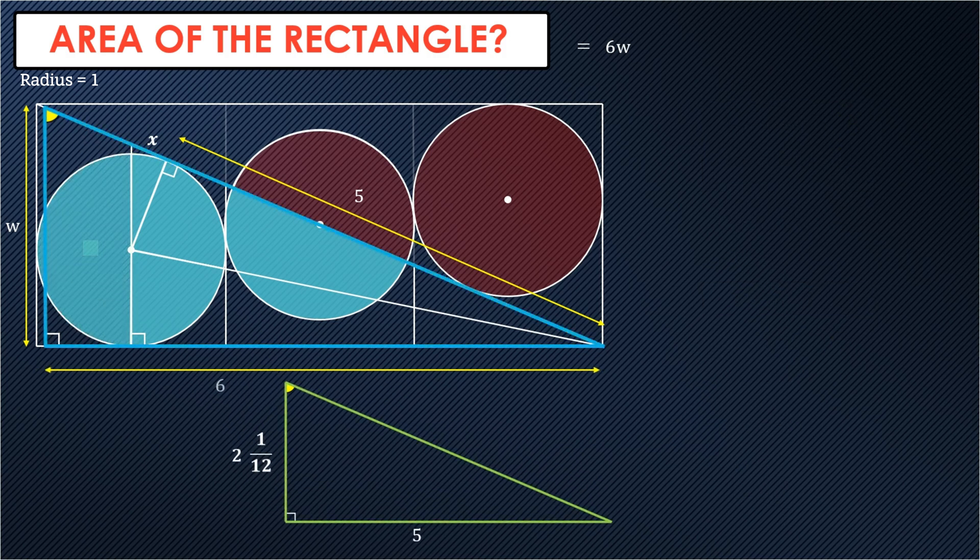Now we are going to work out the width. If we have a look at these two triangles, the blue triangle and the green triangle, again, we have similar triangles. So they both have a right angle and they both share an angle. The fact that these two lines are parallel means that they're both equal, which means that again, we have a ratio problem.